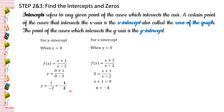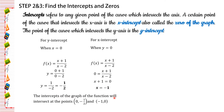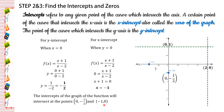The intercepts give us the points (0, negative 1 half) for the y-intercept and (negative 1, 0) for the x-intercept. We plot and locate these on the Cartesian plane. The point on the x-axis at negative 1 is the x-intercept, and the point on the y-axis at negative 1 half is the y-intercept.